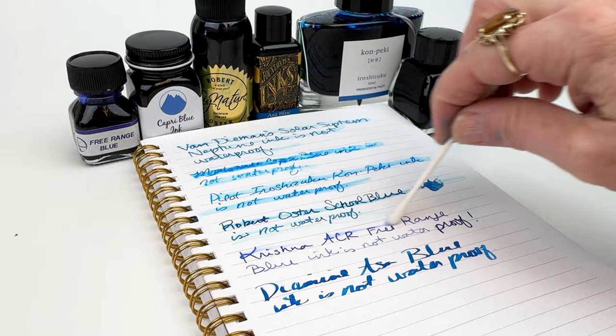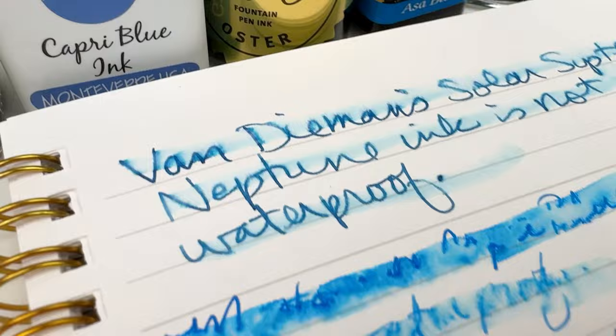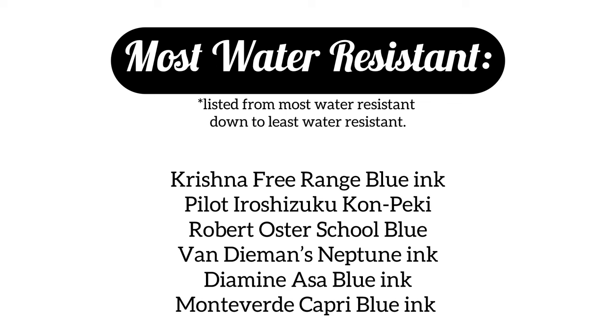Here is a good look at how they performed. We were looking for the least distortion and the most legible. We decided the most water resistant was Krishna's Free Range Blue, followed by Pilot Konpiki ink, and then Robert Oster School Blue. And then Neptune, then Asa Blue, and then Capri Blue ink.